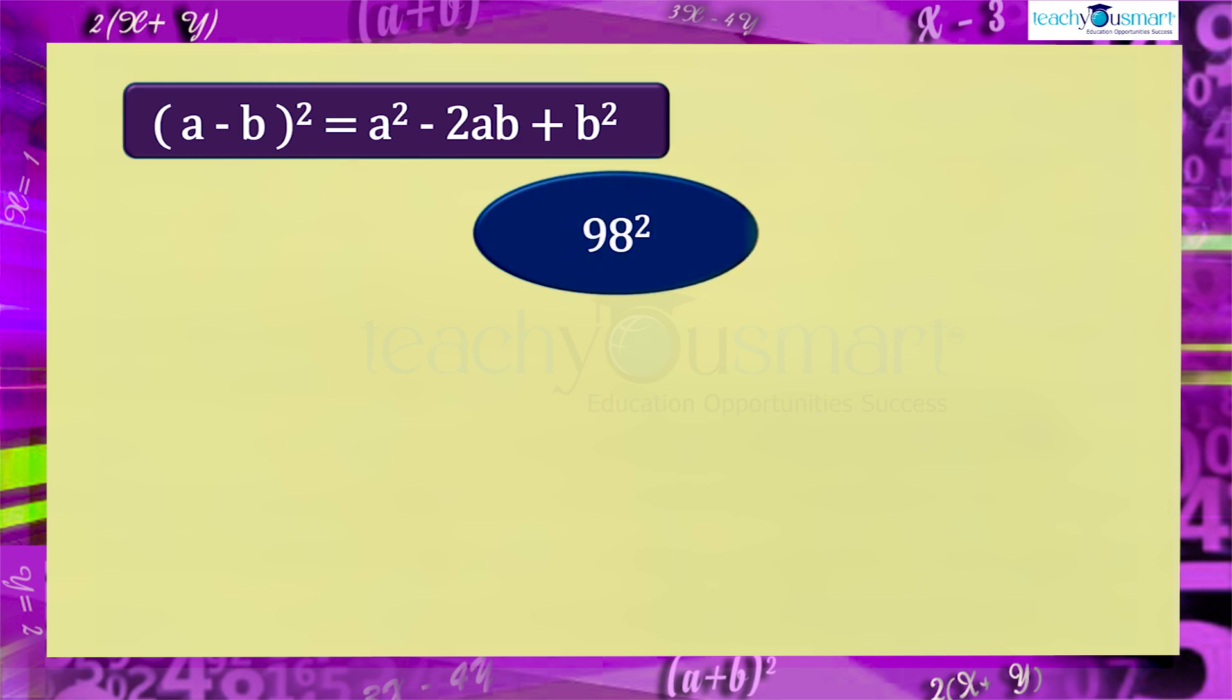This identity can also be used to find the square of natural numbers. For example, find the square of 98.